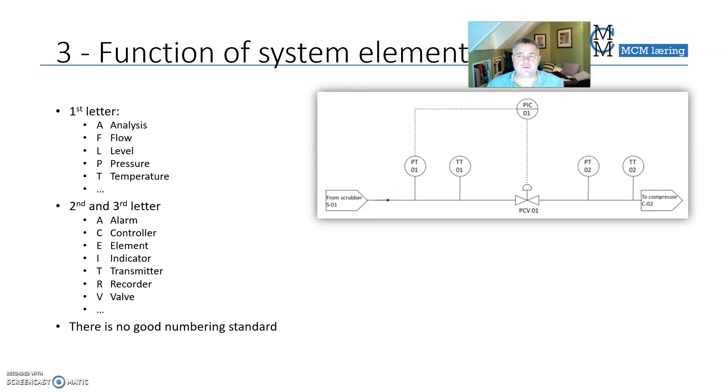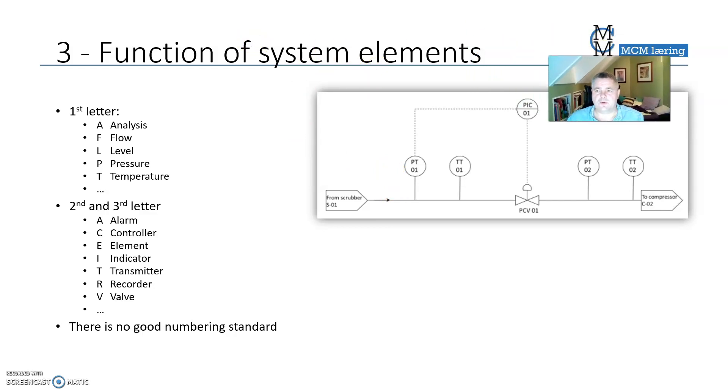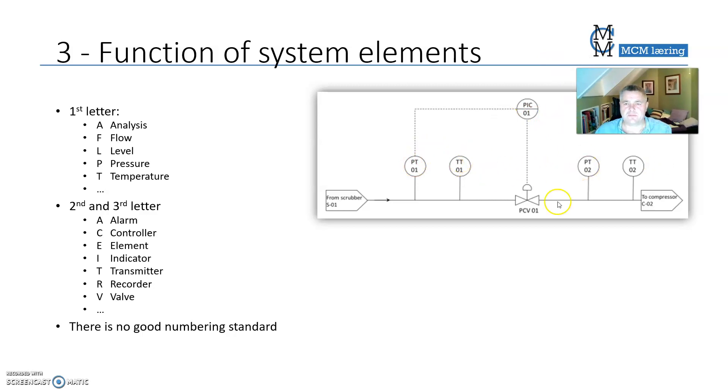The function of system elements is shown with the letters inside. The first letter describes what it's for: is it for analysis, flow, level, pressure, temperature, or whatever. This is for pressure, this is for temperature. The second and third letter is what it does. This is a pressure transmitter, so this is a pressure sensor. This is a temperature transmitter, temperature sensor.